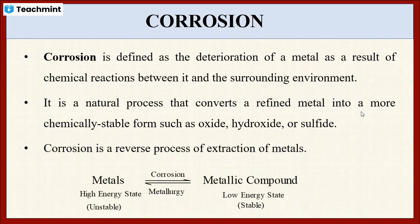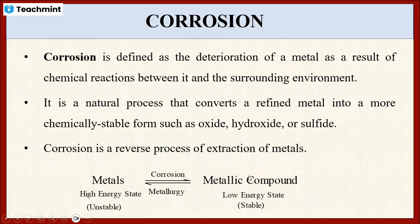That is, the conversion of metals into a metallic compound is corrosion, whereas extraction of these metals from its metallic compound is nothing but metallurgy. As I said, these metals are in the higher energy state whereas their corresponding compounds are in the lower energy state. So obviously, these metals always have a tendency to acquire a more stable state, that is lower energy state. Hence, these metals undergo corrosion.